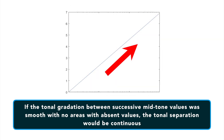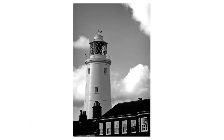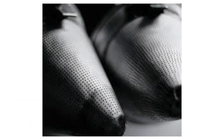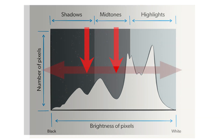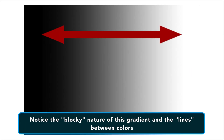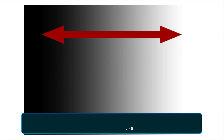If the tone gradation between successive mid-tone values was smooth with no areas with absent values, the tonal separation would be continuous and you would have an image with smooth transitions where the brightness appears consistent and uninterrupted from one value to the next. If, however, there were blank areas between successive mid-tone values on a histogram, this would yield a visible stepping of shades in a gradient, constituting graduated colors that break into larger blocks of a single color, reducing the smooth look of a proper gradation.